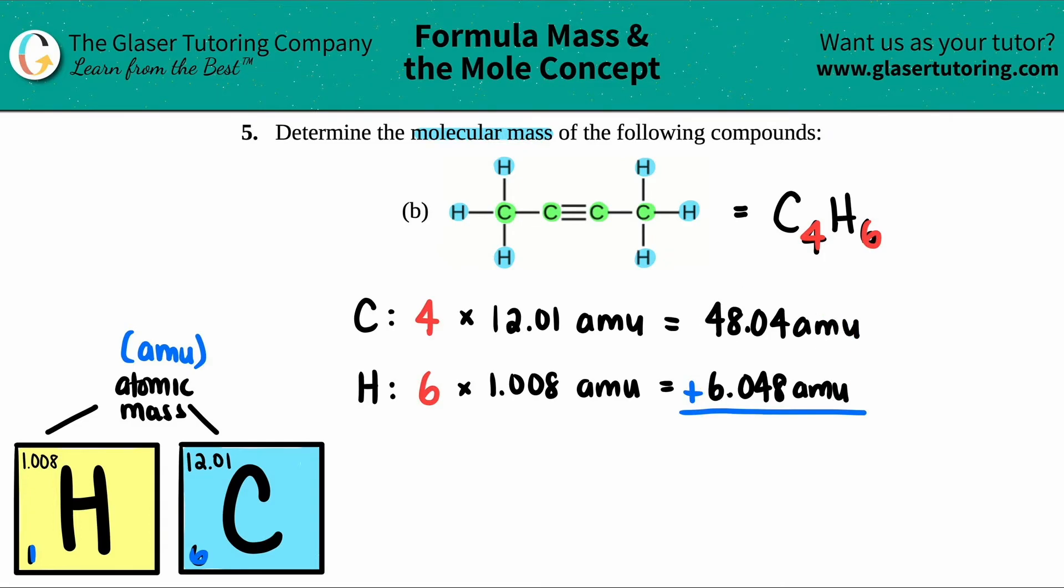So 6.048 plus 48.04. And we get a whopping 54.088 AMU. And that is the molecular mass of the entire compound. And that's it.